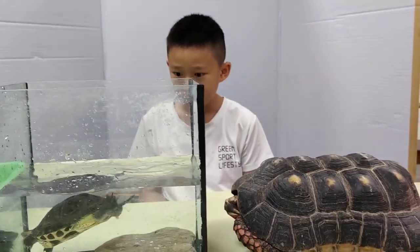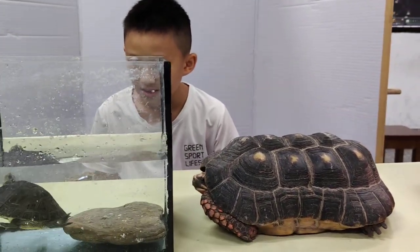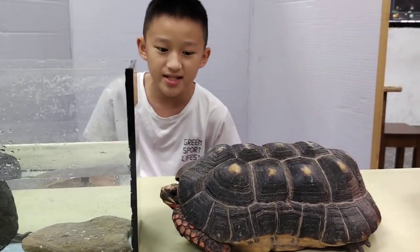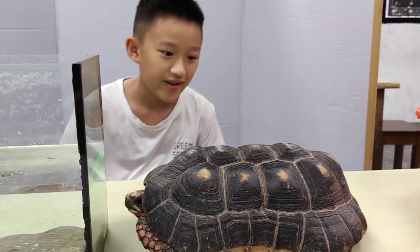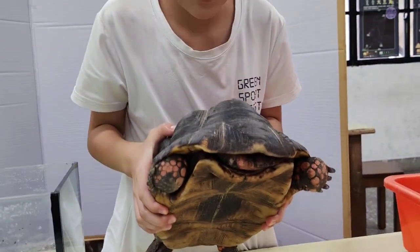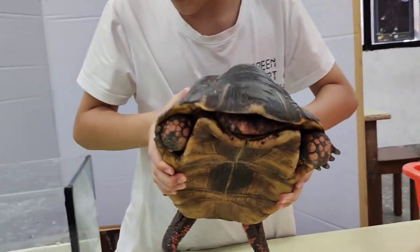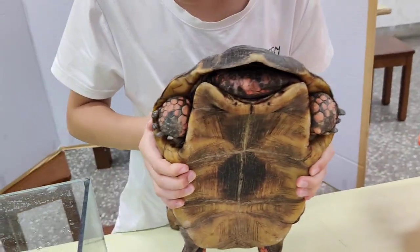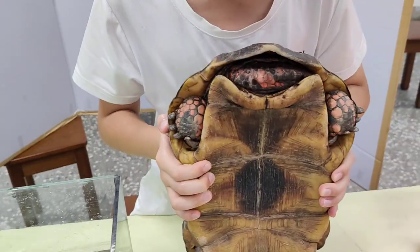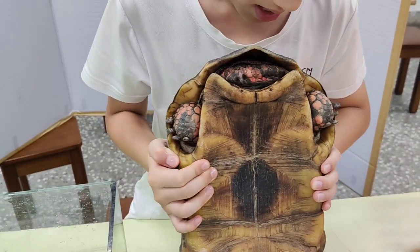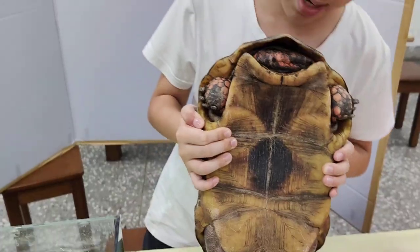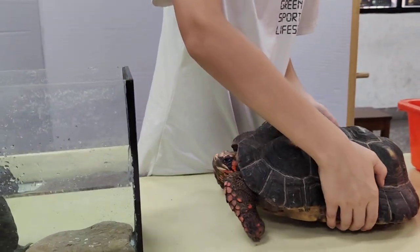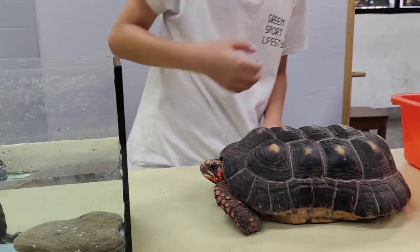How can you tell the difference between male and female? Both are the same — you check from their tail. You can check out his tail. How can we know if it's male or female? Because his tail is very big. So is it male or female? It's a male. So males usually have a longer tail.